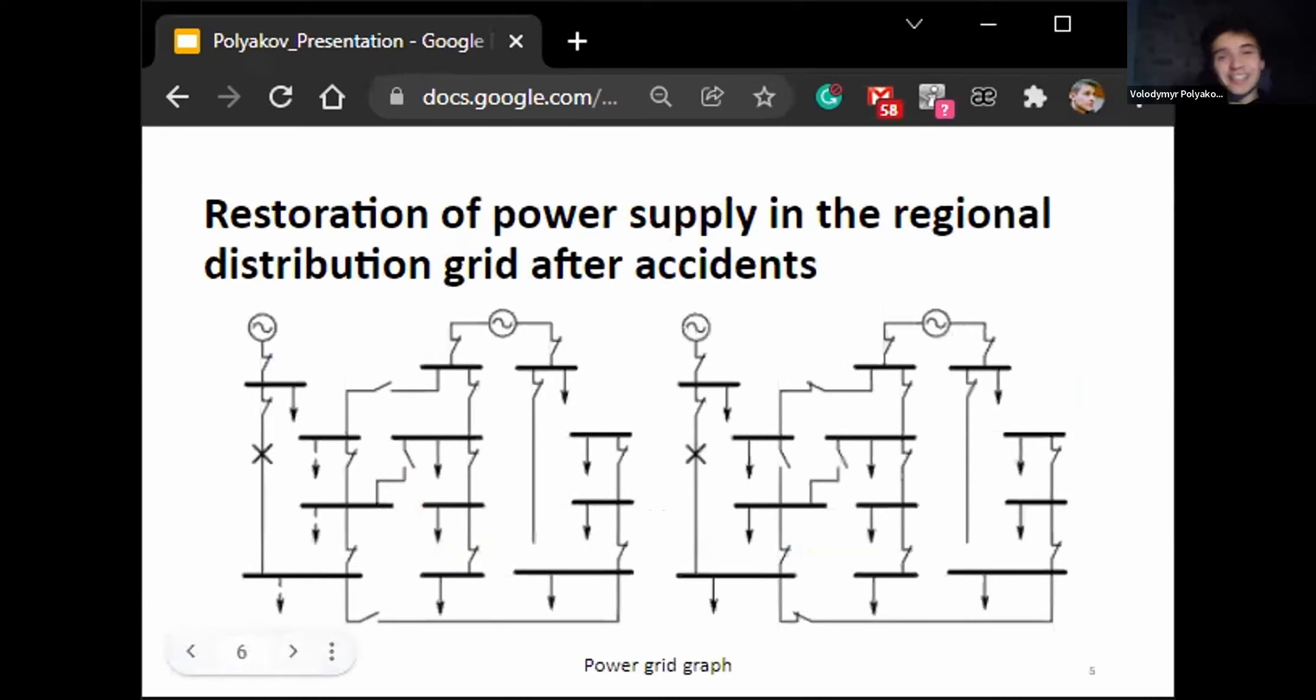For restoration of power supply in the regional distribution grid after accident, you can see an example of power grid graph for such a problem on the slide. In the left part of the figure in the normal state, all the loads are distributed between two power centers. There are no cycles or powered lines. When an accident occurs in such power grid, three consumers marked with dashed arrows are de-energized. The situation of power supply restoration when all three disconnected consumers cannot be powered from one power line due to overload is shown on the right. In this case, the de-energized section is divided into two parts by opening the circuit breaker that is normally closed. After that, it becomes possible to power de-energized consumers from different lines of the working part of the grid.